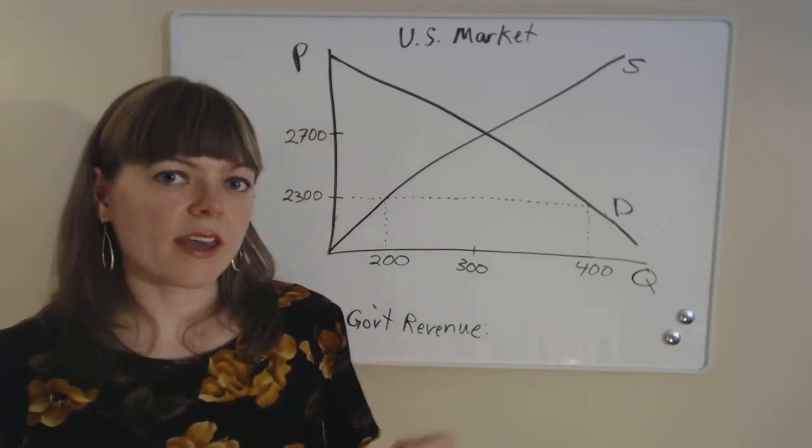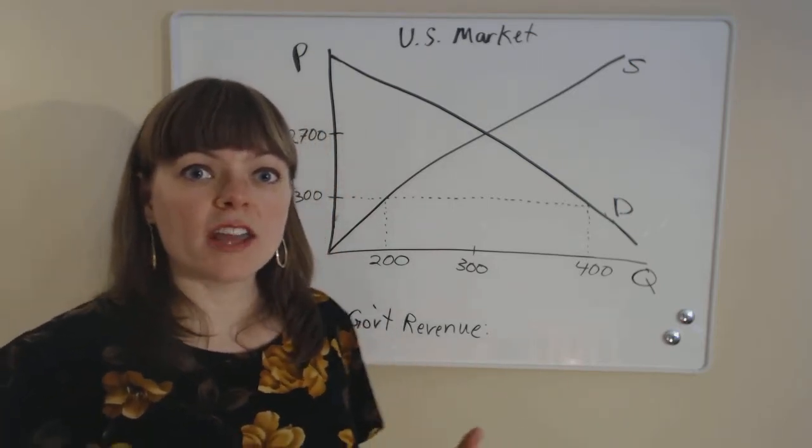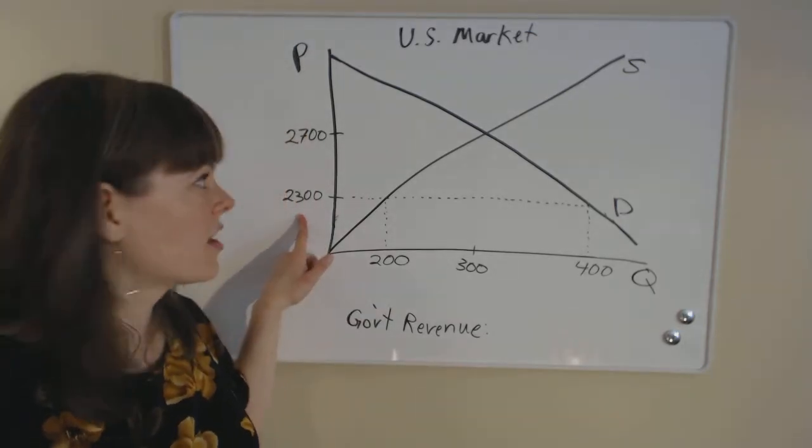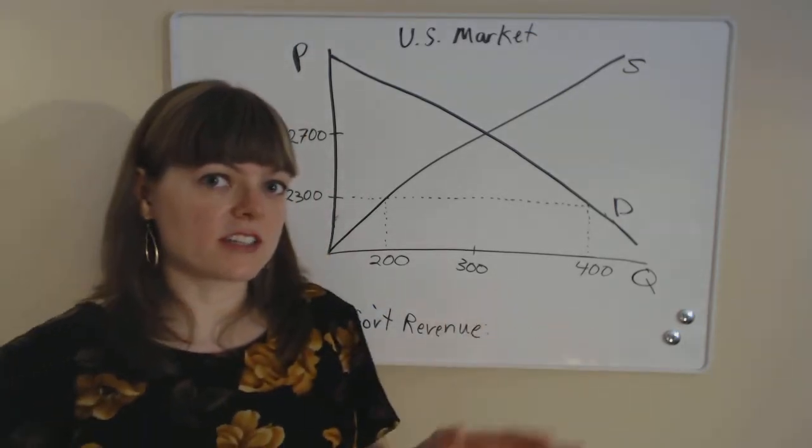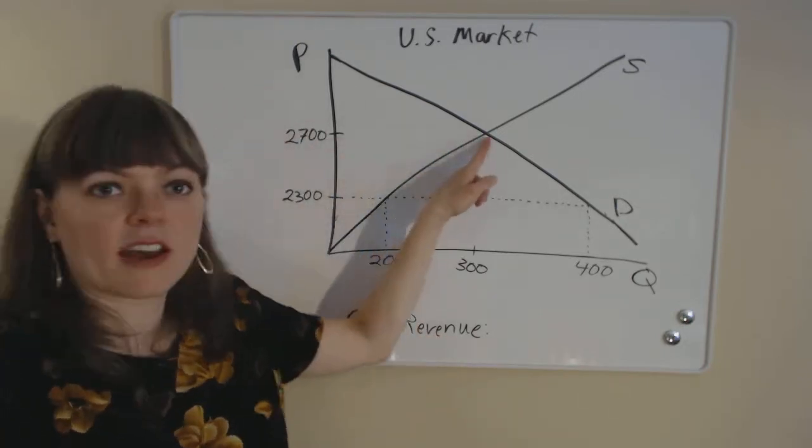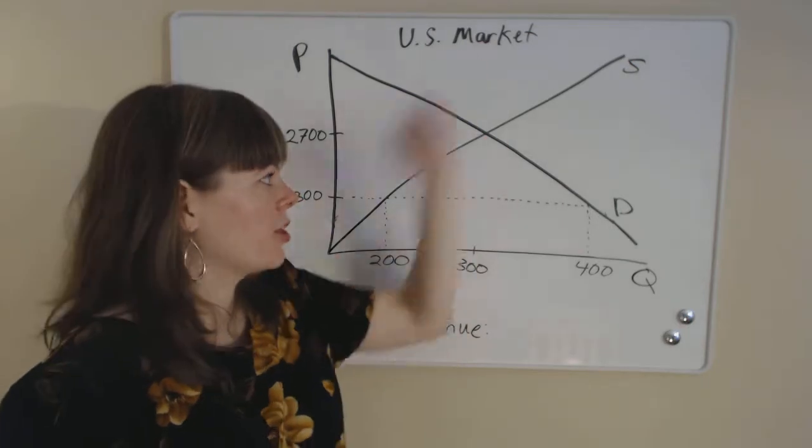And we're looking at what happens when we have free trade, where internationally you can buy one of these engines for $2,300. So if you close all markets and don't have free trade, the price is going to be $2,700. That's going to be market equilibrium in the U.S. market.